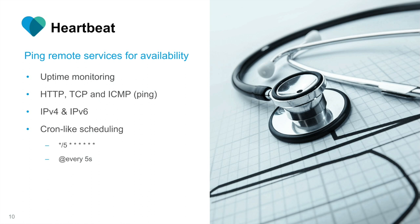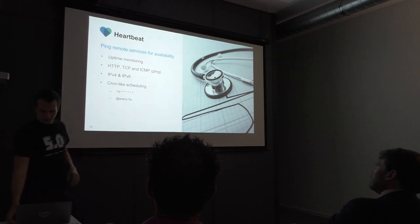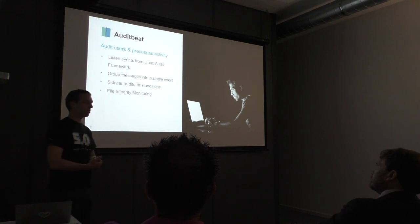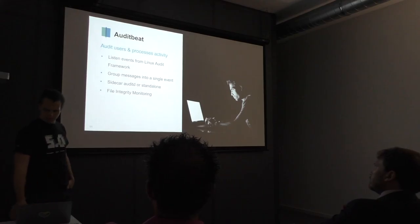HeartBeat is kind of an open-source Pingdom. You can ping servers — it tells you response time, whether it's available. You can install it on your machines, define cron jobs for what to check, and get all the checks in Elasticsearch. AuditBeat: if you run Auditd on Linux, you can hook into that. It takes all those events, you can define your own filters and Auditd rules, and AuditBeat ships everything to Elasticsearch. It's mostly a security use case — you can also do file integrity monitoring: who modified a file, when, and so on.